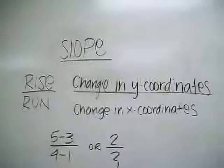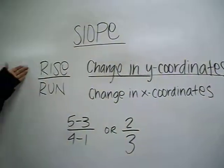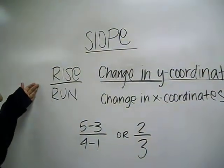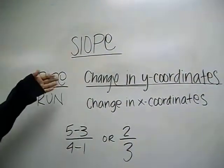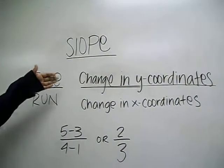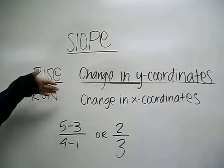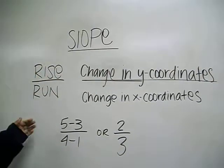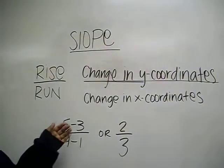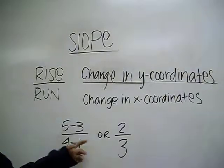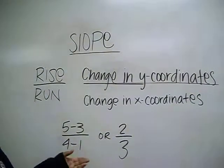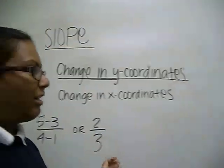And now, over to Primesha. Okay, so slope is rise over run, which is also the change in y to the change in x. So 5 minus 3 equals 2, and 4 minus 1 equals 3.